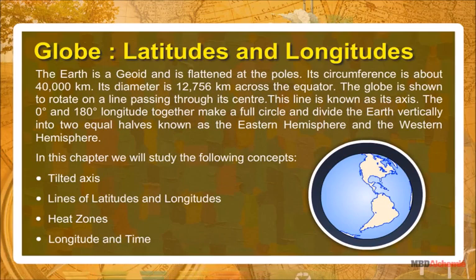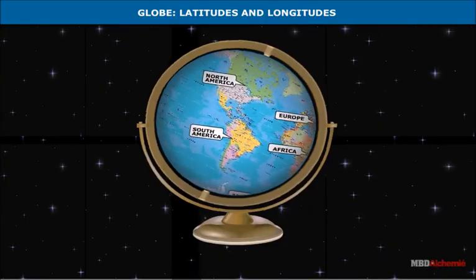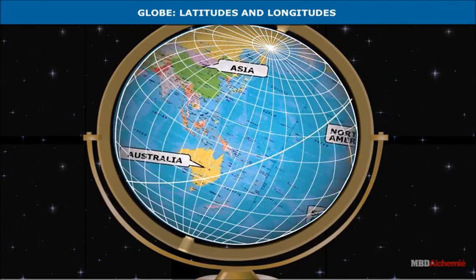The earth is a geoid and is flattened at the poles. Its circumference is about 40,000 kilometers and its diameter is 12,756 kilometers across the equator. The globe is shown to rotate on a line passing through its center, known as its axis. The zero degree and 180 degree longitude together make a full circle and divide the earth vertically into two equal halves. In this chapter we will study the following concepts: tilted axis, lines of latitudes and longitudes, heat zones, longitude and time, globe latitudes and longitudes.